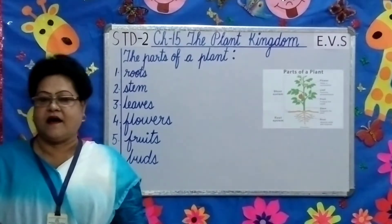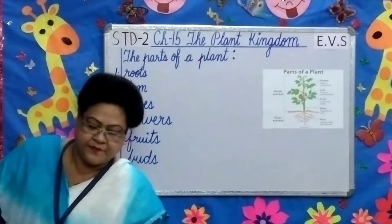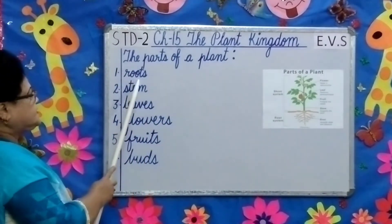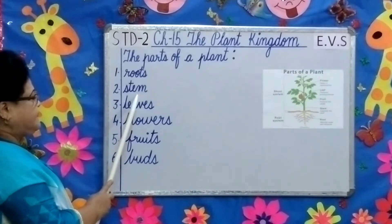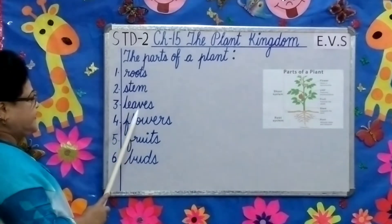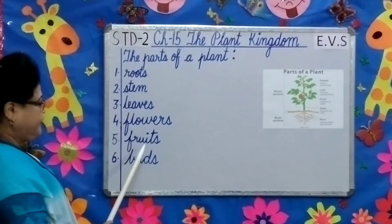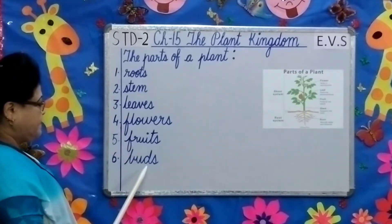The parts of a plant are: roots, stem, leaves, flowers, fruits, and buds.